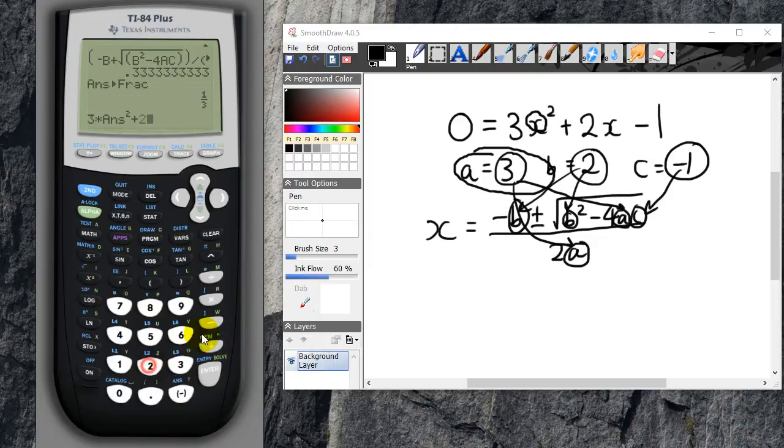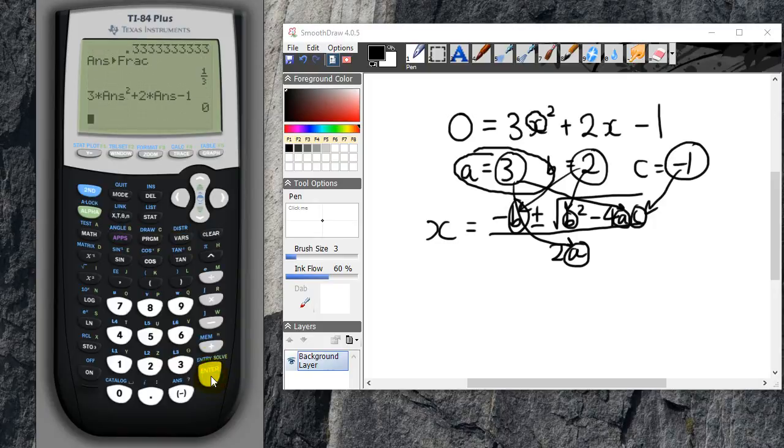Plus 2 times the answer, minus 1. We're just substituting this number back into the formula to see that it does equal 0. And yes, the answer does equal 0.